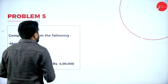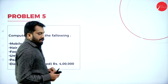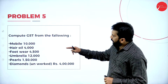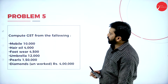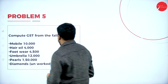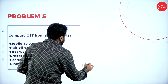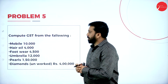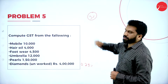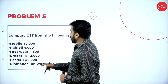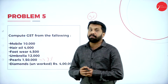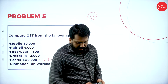Now we'll go to Problem Number 5. In this problem we have: mobile, hair oil, footwear, umbrella, pulse, and diamond uncut. Remember — if diamond is unworked, it must be 0.25 percent. If the diamond is other than unworked, it will be three percent. Pearls — they have not mentioned unworked, so we go with three percent. You have to remember this.